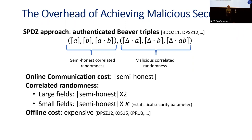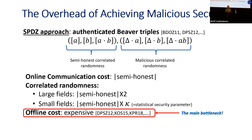The advantage of the SPDZ approach is that the online communication costs remain the same as with semi-honest security. However, the correlated randomness grows by a factor of two for large fields and by a factor depending on the statistical security parameter for small fields or rings. The offline cost is the expensive part—the main bottleneck—and there is a long line of works aiming to improve its efficiency, but it is still orders of magnitude higher than the online cost.